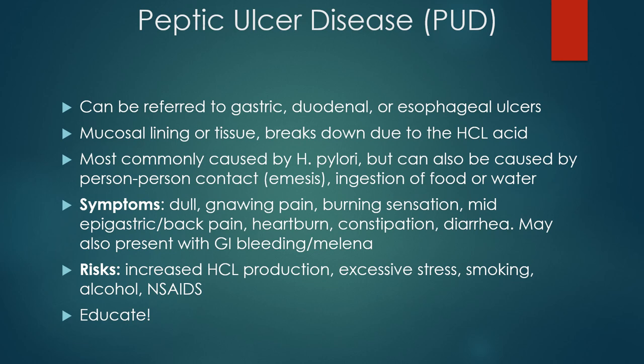Most of the time when you have a peptic ulcer you will have multiple ulcers. The most common cause of peptic ulcer disease is that pesky bacteria H. pylori, which is acquired by ingestion of food and water and is transmitted from person to person through either close contact or exposure to their emesis. H. pylori doesn't always impact someone with peptic ulcer disease — that information is really not fully known yet. Other risk factors for peptic ulcer disease include stress, smoking, NSAIDs, and alcohol use.